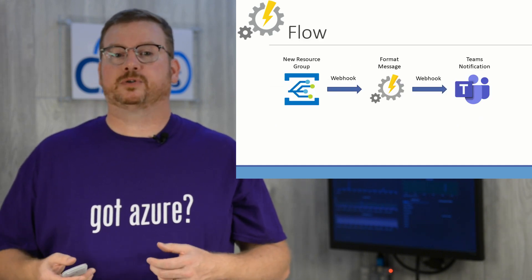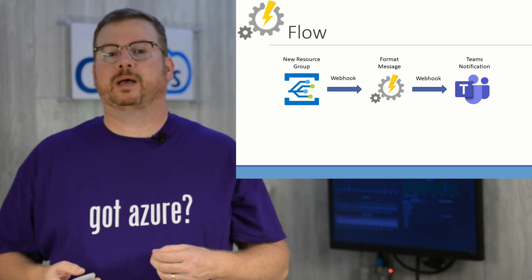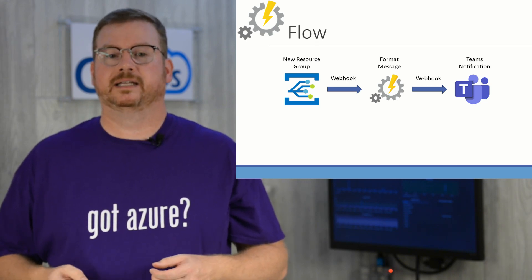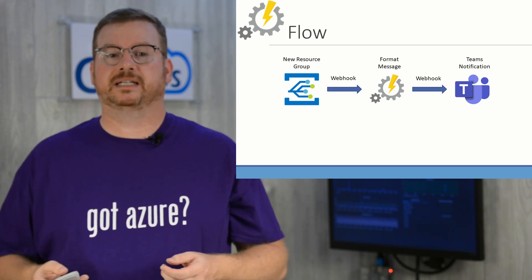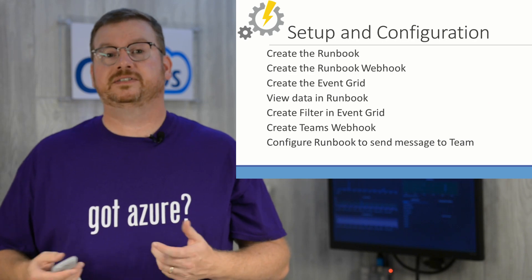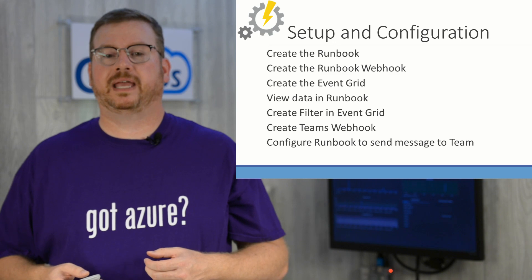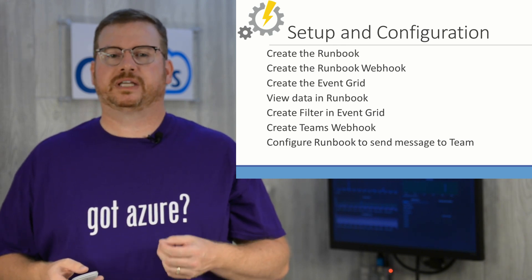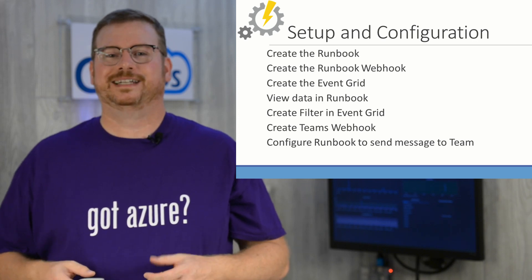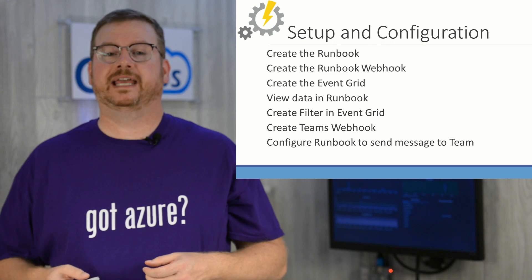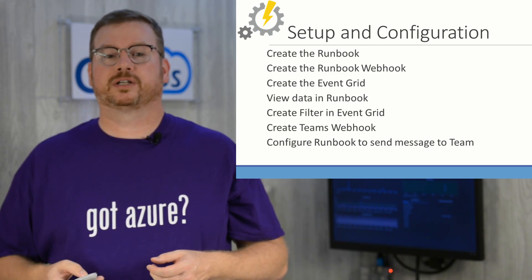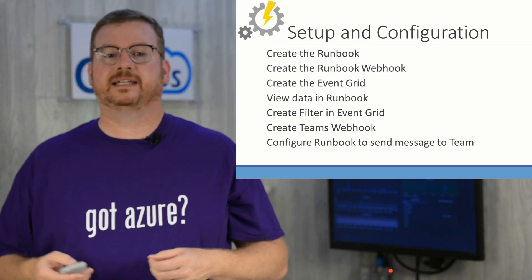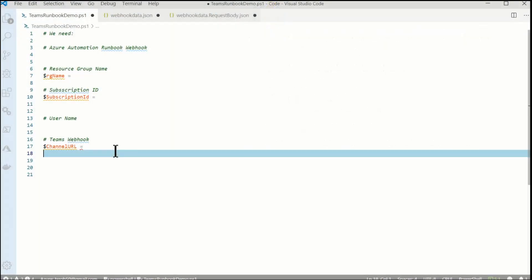Once finished, the flow will look like this. Event Grid will send a webhook when a new resource is created. The Event Grid webhook starts the Azure Automation runbook that formats the message with specifics like the resource group name and who created it. Azure Automation then sends a webhook to Teams with the body of the message. If all goes as planned, Teams will display the message. Here are the steps: first create the runbook, then create the runbook webhook — you cannot create a webhook to a runbook until it's published. Next, create an Event Grid subscription. Then trigger an event to view the data coming into the runbook. Once we have that data, create a filter in Event Grid so we only get notifications of new resource groups. Finally, create the Teams webhook and configure it to send the message to Teams. Once that's all done, we'll test it. Buckle up everyone, it's demo time.